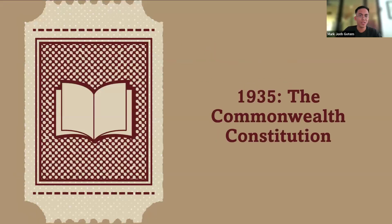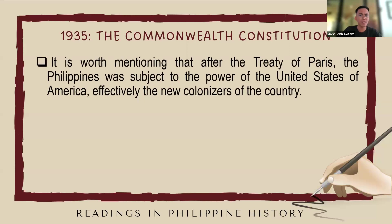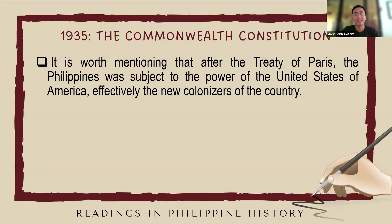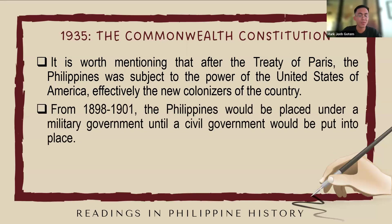Let's start with the 1935 Commonwealth Constitution. It is worth mentioning that after the Treaty of Paris, the Philippines was subject to the power of the United States of America, effectively the new colonizer of the country. Following the Treaty of Paris in 1898, which marked the end of the Spanish-American War, the Philippines came under the control of the United States. From 1898 to 1901, the Philippines would be placed under a military government until a civil government would be put into place.